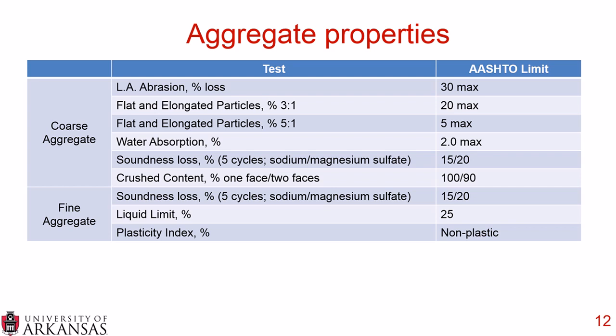Shifting to fine aggregate from AASHTO M325: soundness loss for both sodium and magnesium sulfate is 15 to 20% depending on which chemical is used. The liquid limit for fine aggregate is 25%, and you want a non-plastic plasticity index.